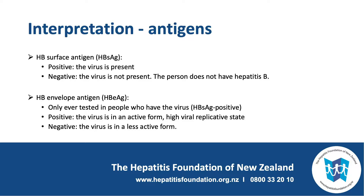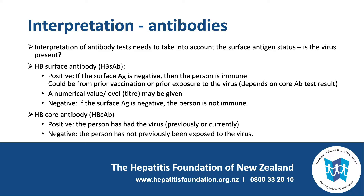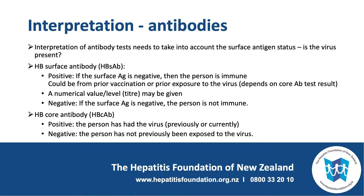Moving on to the antibody blood tests. It is useful to interpret these in the context of whether the virus is present or not. Starting with the surface antibody: if the surface antibody is positive and the surface antigen is negative, then it means the virus is not present and the person is immune to hepatitis B infection. Sometimes a numerical value or titre may be given for the surface antibody, and this can be used to interpret degree of immunity to hepatitis B.